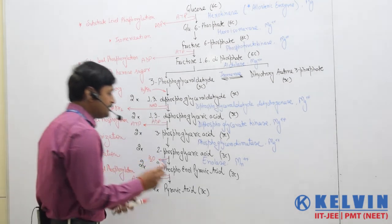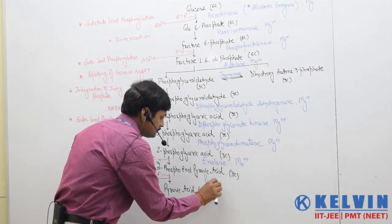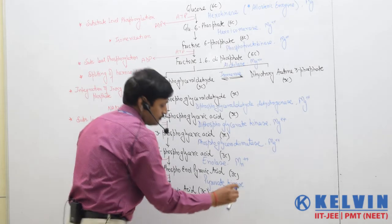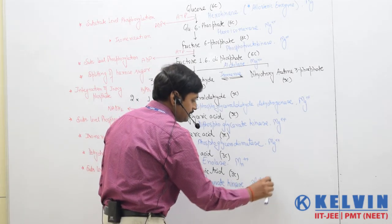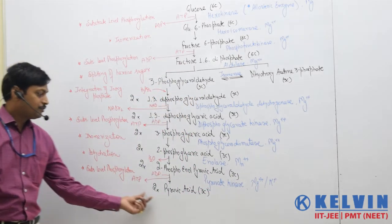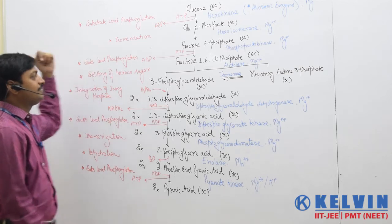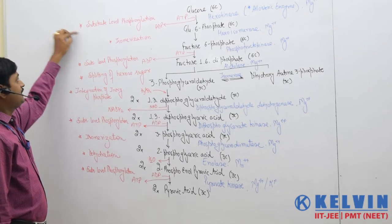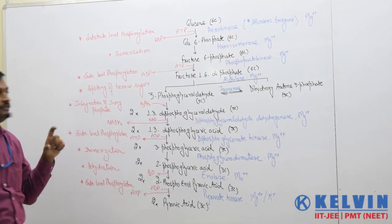The enzyme used here is pyruvate kinase, which also uses magnesium ions or sometimes K⁺ as an activator. Finally, we have two molecules of pyruvic acid. So in complete glycolysis, if we summarize glycolysis, there are 10 steps.